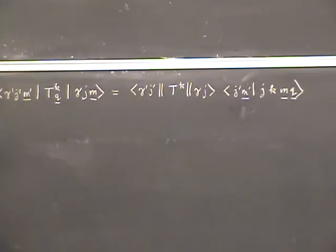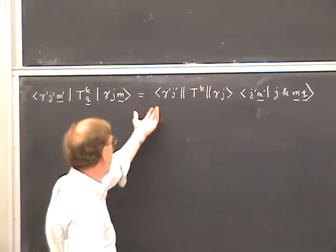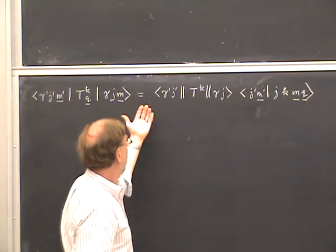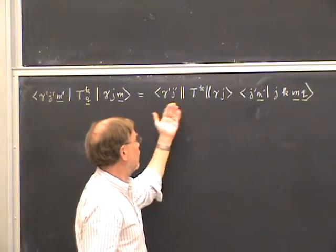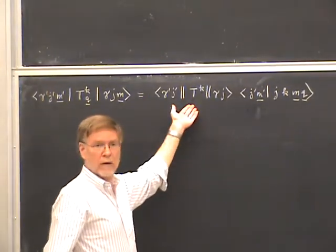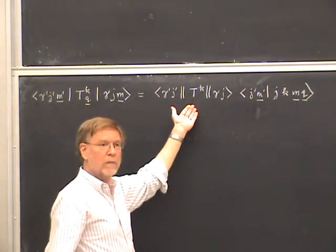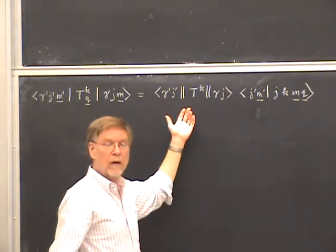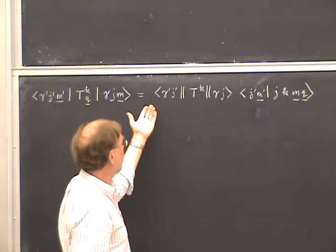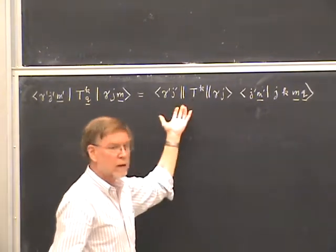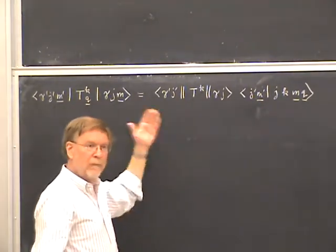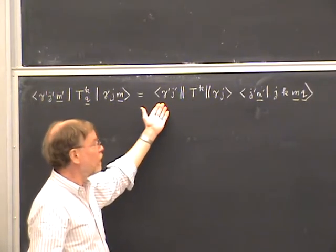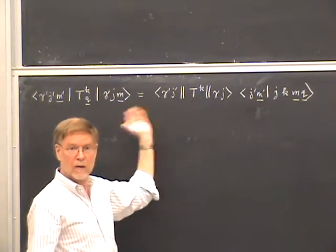In general, the proportionality factor depends on everything else — the gammas, the J's, and the K value of the operator. This proportionality coefficient is conventionally denoted as a reduced matrix element, indicated with double bars, to show it's not an ordinary matrix element. Basically, it's just a way of listing everything else the result could depend on, and it's defined as the coefficient that makes the equation work.